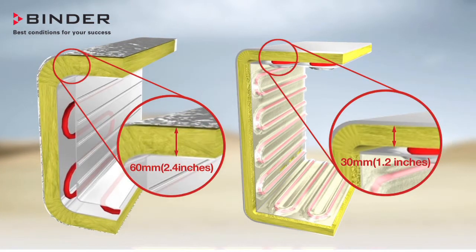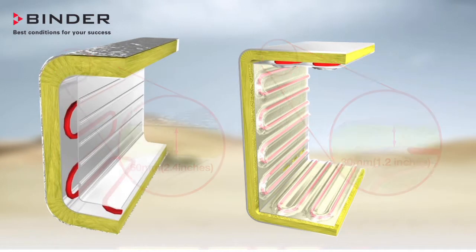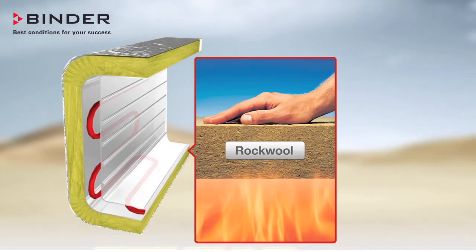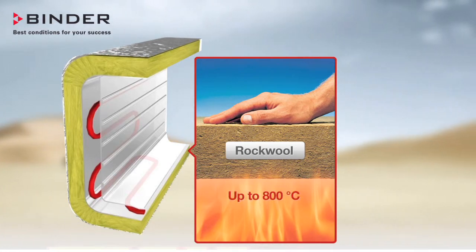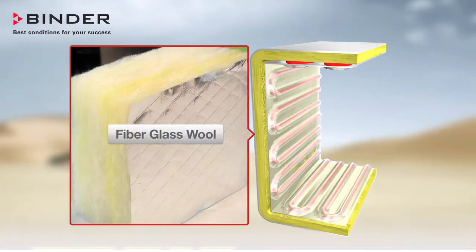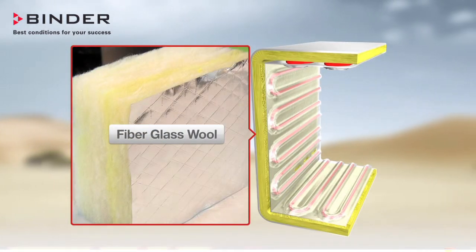Not only is the Binder Insulation more than twice the thickness, it is made of rock wool instead of fiberglass. Rock wool is specifically designed for high-temperature oven applications that are up to 800 degrees Celsius. Fiberglass is a silica-based insulation material and is not as widely accepted in heavy industry.